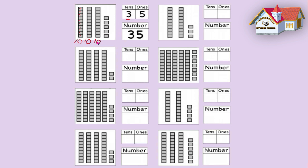Now we're going to count the single blocks. These are called ones. Let's count them. Are you ready? Count with me. 1, 2, 3, 4, 5. How many ones do we have? 5 ones. Well done, you are absolutely correct. And here we have 5 ones written there already.